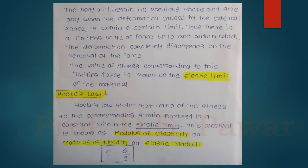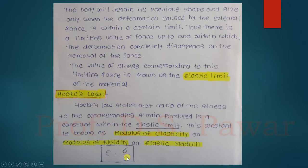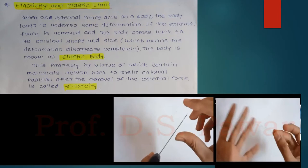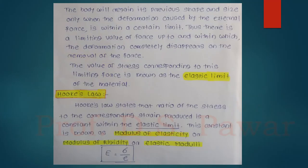What is Hooke's Law? Hooke's Law states that the ratio of stress to the corresponding strain produced is constant within the elastic limit — meaning stress is directly proportional to strain within the elastic limit. We can write: stress is proportional to strain, and the constant of proportionality is called the modulus of elasticity, or modulus of rigidity, or elastic modulus. Hopefully you have understood elasticity, elastic limit, and Hooke's Law.